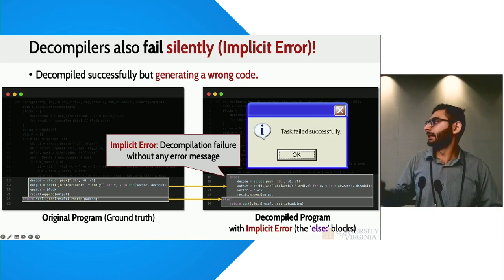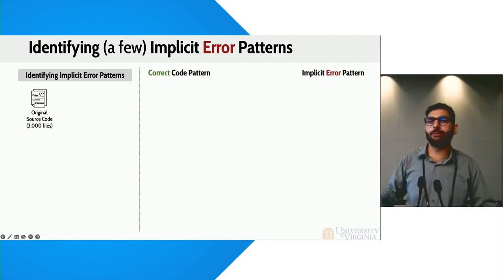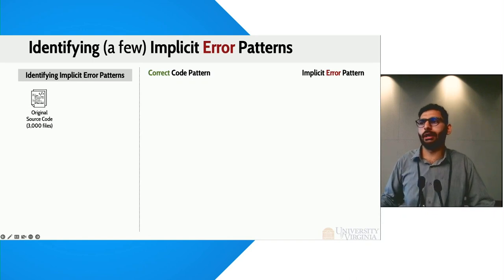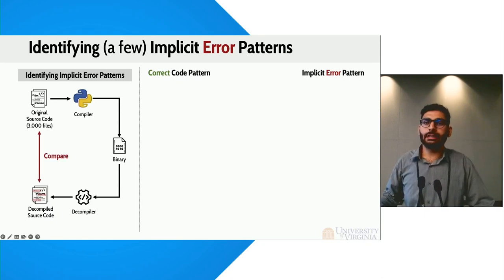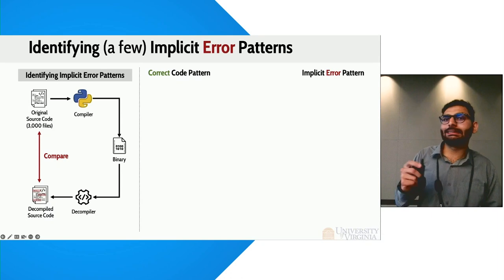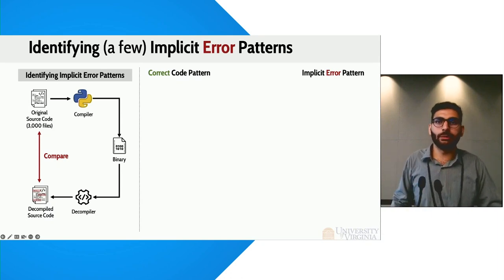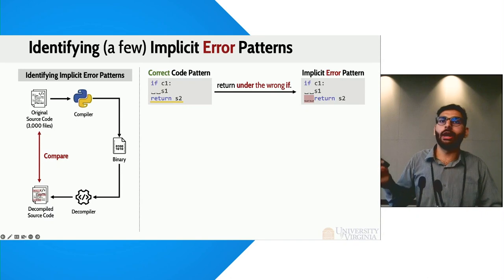So we studied them. We did a controlled study and took 3,000 source code files from PyPy and other places. We compiled them, decompiled them, and then compared both. For a perfect decompiler, we should expect both to be the same. There can be mechanical differences, but what we focus on is the semantic or structural differences between them. On the left side is what we would feed a decompiler, and on the right is the implicit error that we would get.